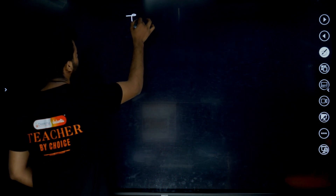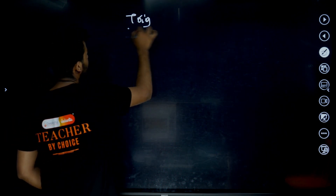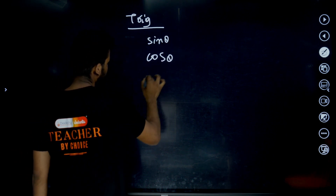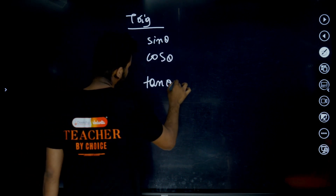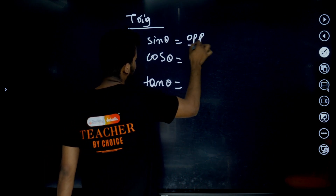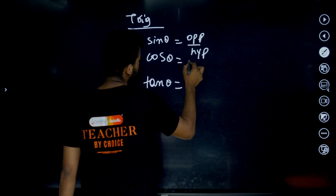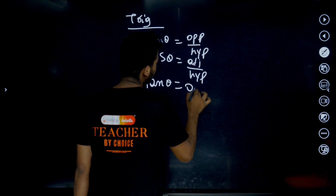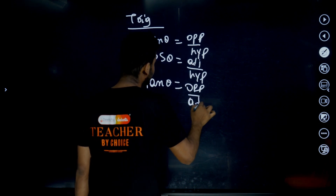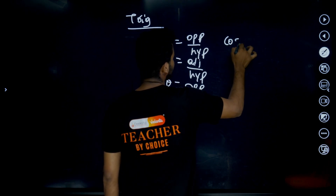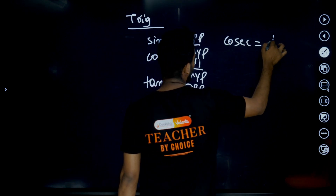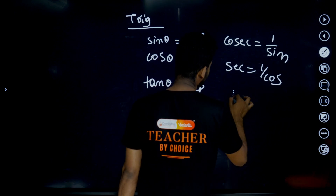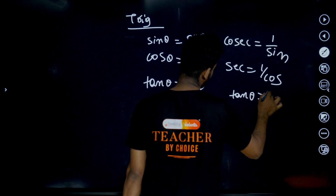Next, trigonometry. Sin θ = opposite by hypotenuse. Cos θ = adjacent by hypotenuse. Tan θ = opposite by adjacent. If you know these three, you can easily find the other three: Cosec θ = 1/sin θ, Sec θ = 1/cos θ, Cot θ = 1/tan θ.